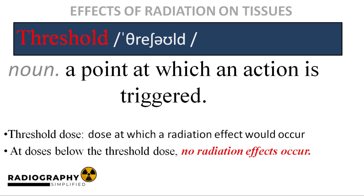To make sure you have the full grasp, let's explain what we mean by threshold dose. A threshold is a point at which an action is triggered. Below this threshold point, no action is triggered. In our case, the action triggered would be a radiation effect. And so, a threshold dose would be the dose at which a radiation effect would occur. Below the threshold dose, no radiation effect would occur.